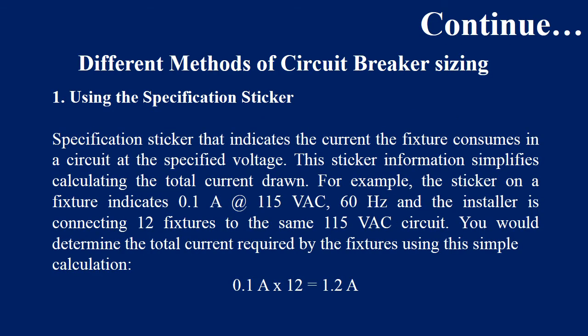There are different methods for circuit breaker sizing. The first method is that you can see the specification sticker on the circuit breaker. When you buy a circuit breaker in the market, the specifications are given on the packaging — for example, the rated current and its capabilities are mentioned on the specification sticker attached to it.